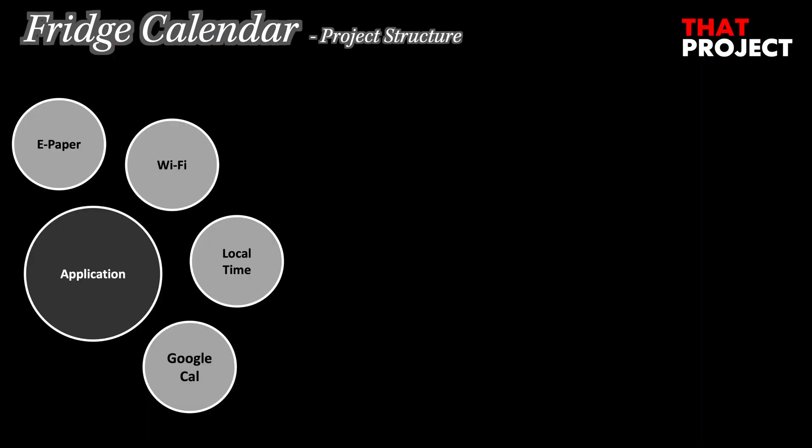Let's take a quick look at how this project is structured and how it works. The source code link for this project can be found in the video description below. It is divided into 4 major components: ePaper, Wi-Fi, local time, and Google Calendar.